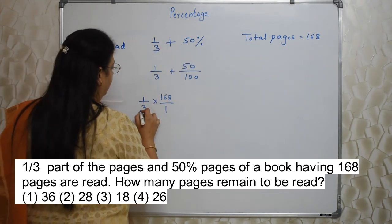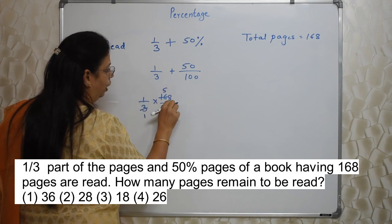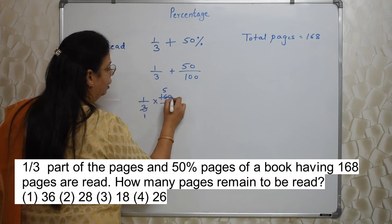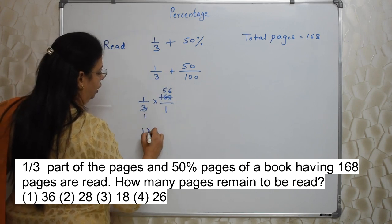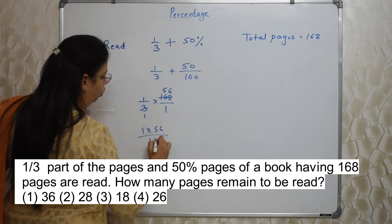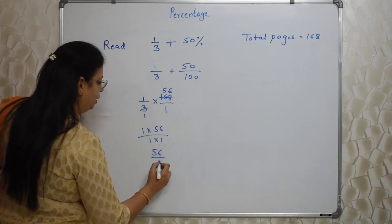Three ones are three, three fives are fifteen, one bacha hai, so one ko eight attach kya hai, so eighteen. Three sixes are. So one into 56 upon one into one, so 56 upon one, that is 56.